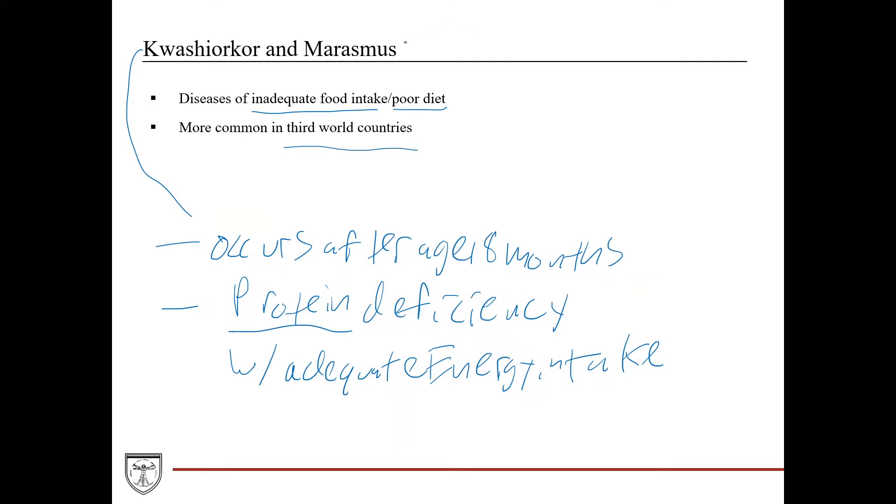Versus marasmus. This is inadequate energy intake in all forms: decreased carbohydrates, decreased fat, decreased protein intake. Because of that, this usually occurs before age one year. That's important because during that first year, growth and development are so heavily dependent on adequate nutritional intake.